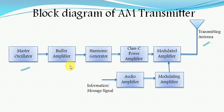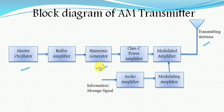The third block is the harmonic generator. The harmonic generator is also a type of oscillator circuit that generates harmonics of the high frequency signal produced by the master oscillator. Harmonics are sub-multiples of the carrier frequency generated by the master oscillator. The harmonics of the constant high frequency signal are directly applied to the Class C power amplifier.